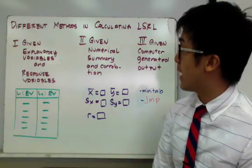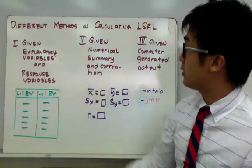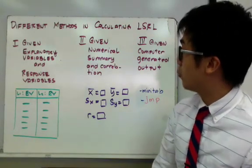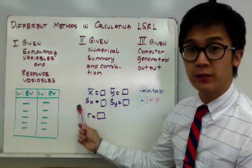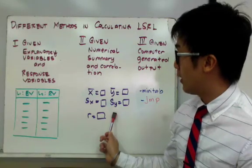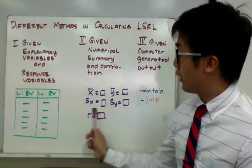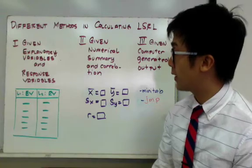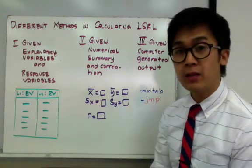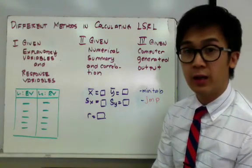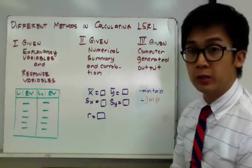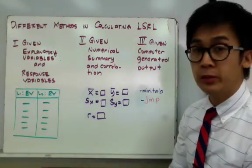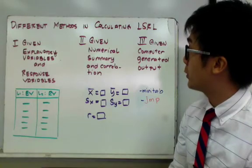The second situation is that the problem given to us is just the numerical summary and the correlation of the two quantitative data sets. We won't see the lists, but instead we'll see numerical summaries such as the mean and the standard deviation of the explanatory variable and the mean and the standard deviation of the response variable, along with their correlation. The third situation is finding the LSRL from a computer-generated output, usually from Minitab and JMP. In this lesson, we're going to work on situation two and situation three.